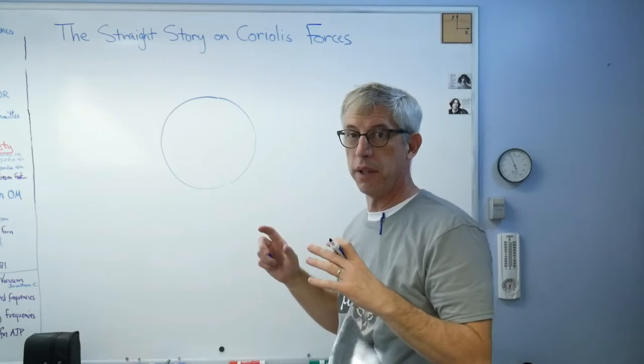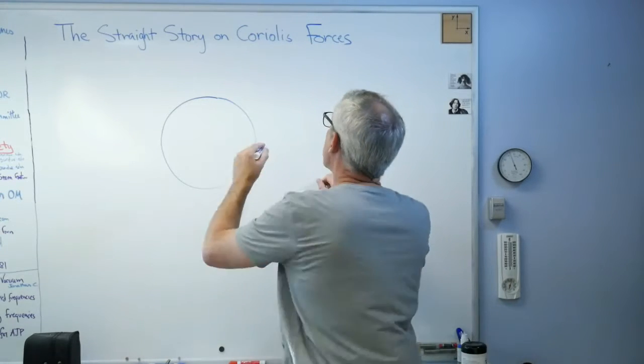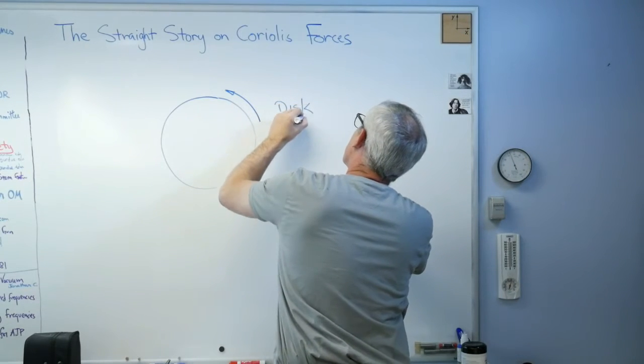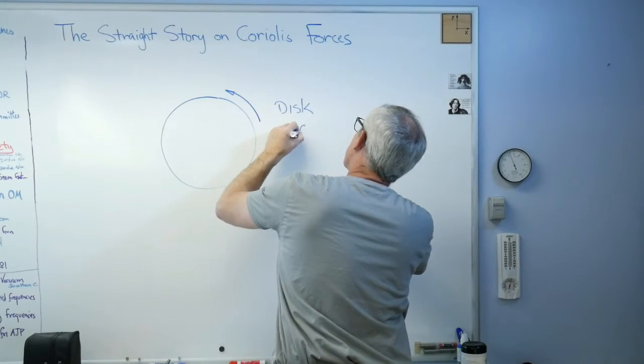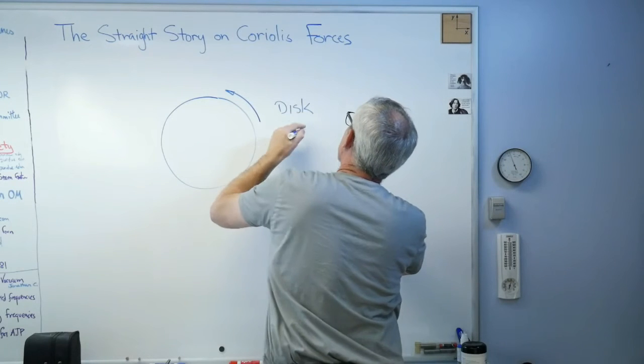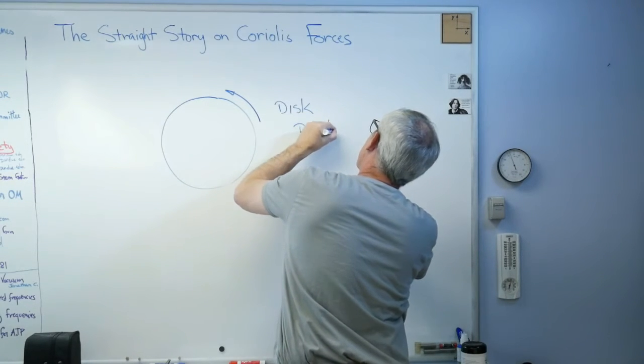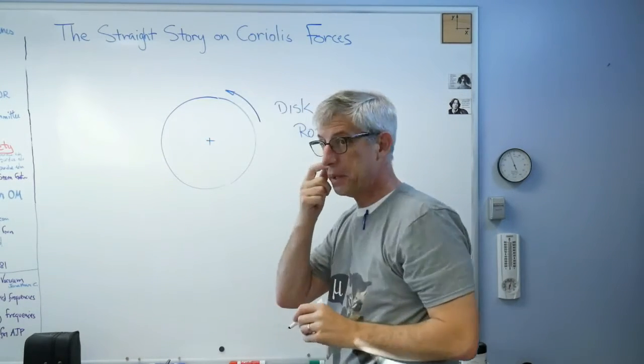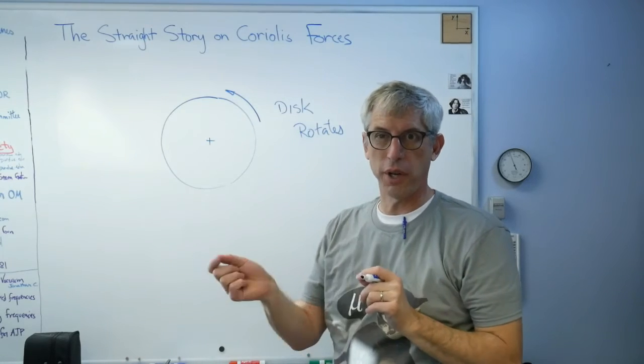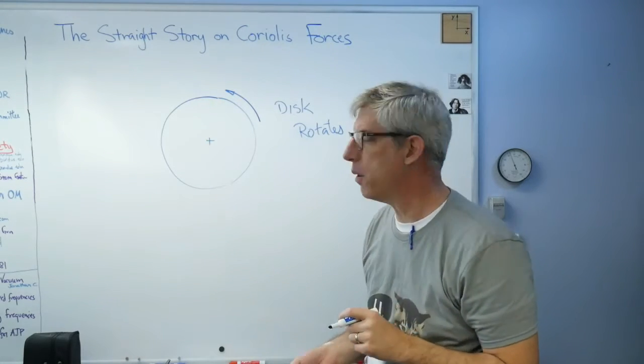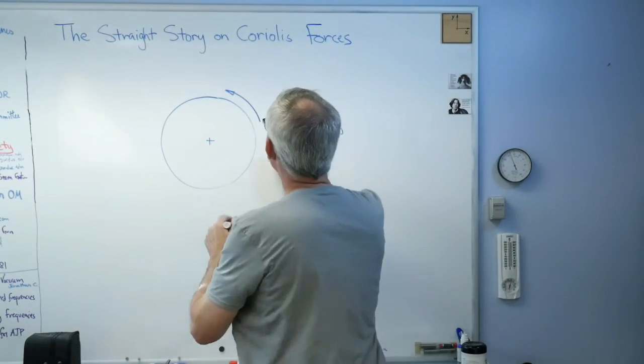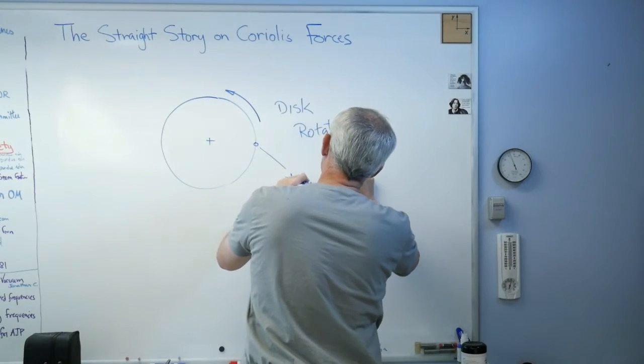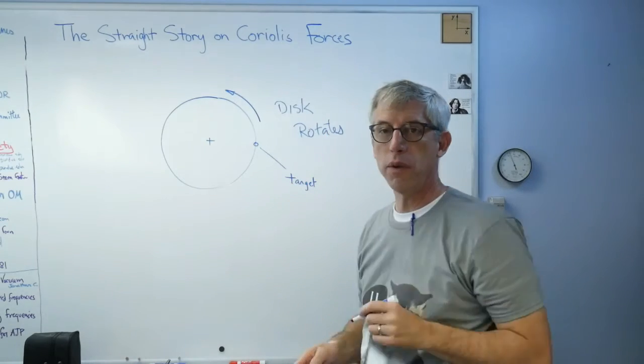Let's say you've got something that's turning, a disc that's turning. The disc rotates, and right in the center there's a little device that's going to shoot a projectile—maybe a marble or a ping pong ball or something—and it's going to try to hit a target right there.